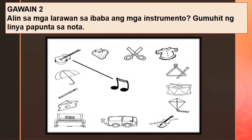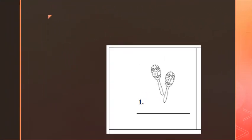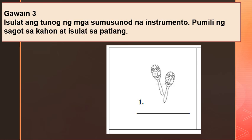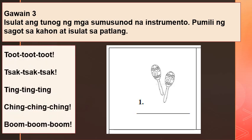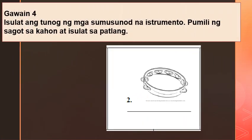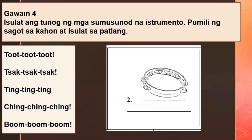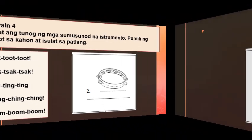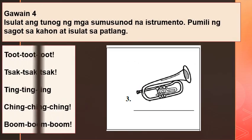Gawain 2: Alin sa mga larawan ang iba't ibang mga instrumento? Gumuhit ng linya papunta sa nota. Gawain 3: Isulat ang tunog ng mga sumusunod na instrumento. Pumili ng sagot sa kahon at isulat sa patlang. Unang bilang, ikalawang bilang — nais kong isulat ninyo ang tunog ng instrumento. Ikatlong bilang: Ano ang tunog ng instrumento?